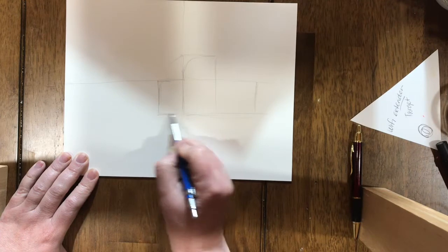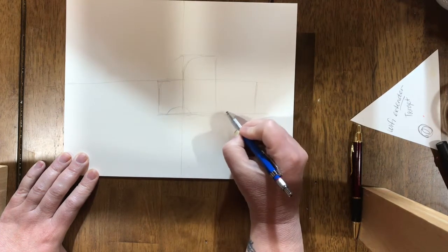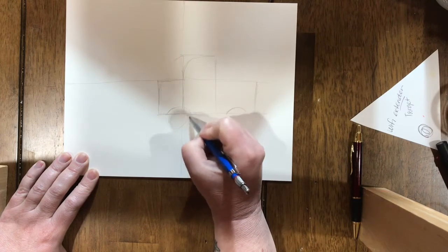I'm going to draw another rectangle in the front and then I'm going to draw some curvy lines on the bottom that will help me figure out where to put the tires.